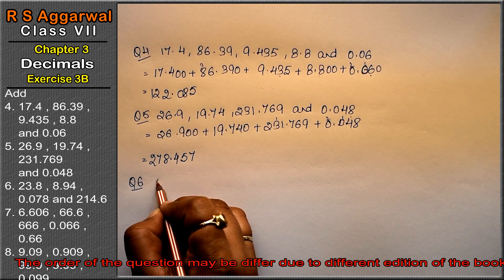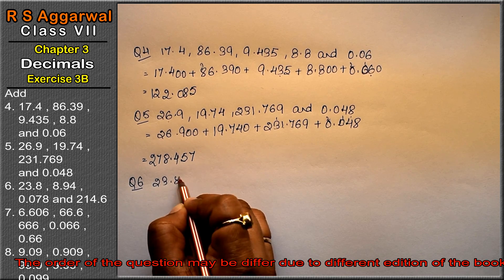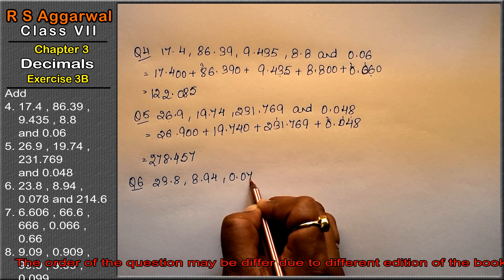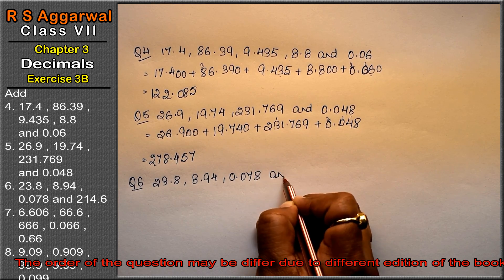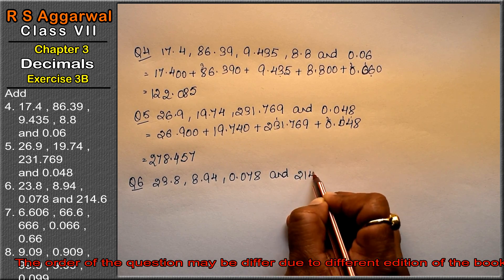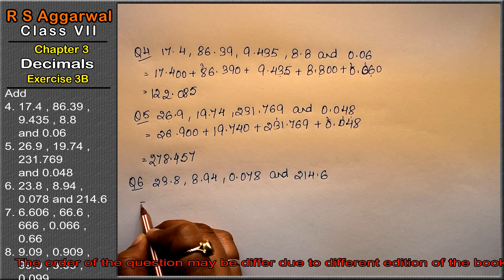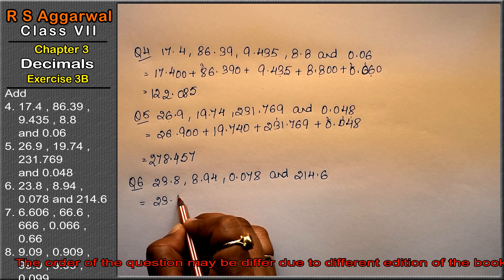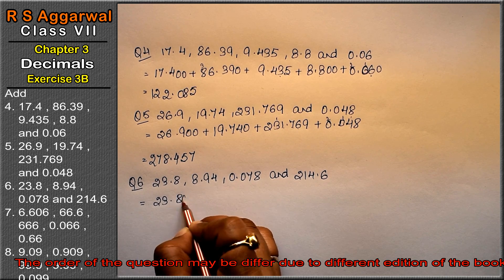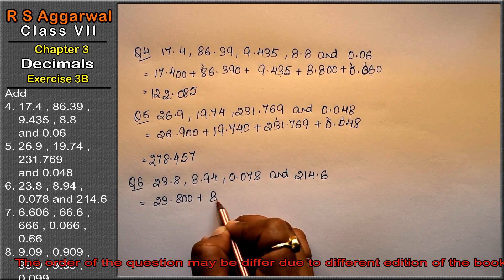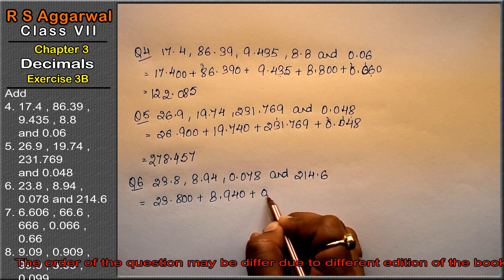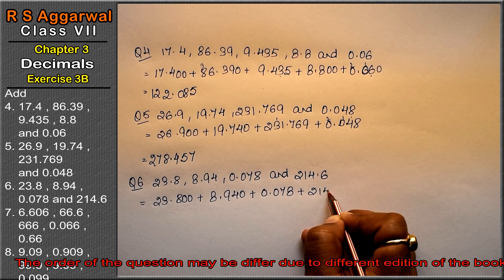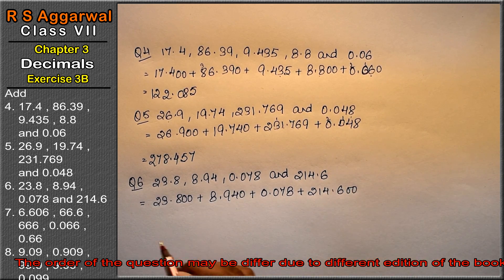Let's do question number 6. Question number 6 is 23.8, 8.94, 0.078 and 214.6. Right. Now like fraction — 3 digits after the decimal. So: 23.800 plus 8.940 plus 0.078 plus 214.600.